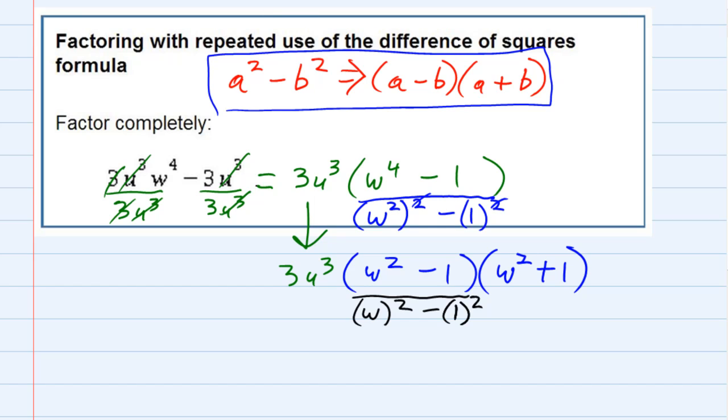So, bringing down that 3u³, and then applying the difference of two squares formula to the part in the black here, says that it is the difference of the first and the last one, dropping the squares. And then, it's the sum of the first and the last one, dropping the squares.